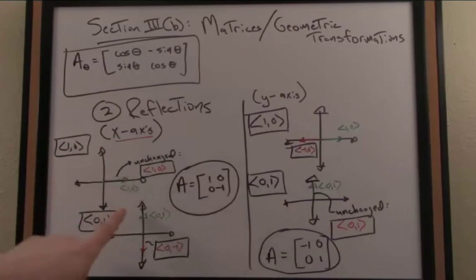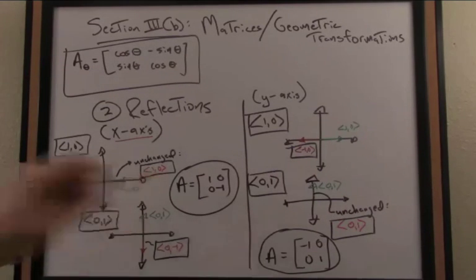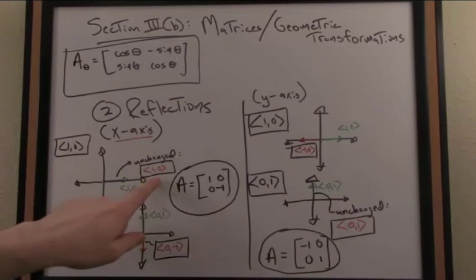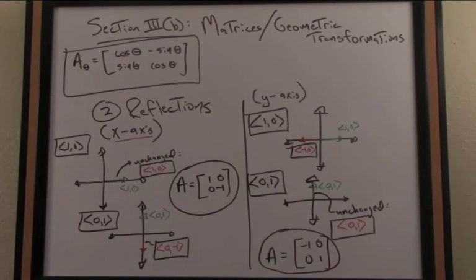So if I reflect about the x-axis and I start with the vector 1, 0 for instance, well if I reflect about the x-axis that leaves the vector as I've indicated unchanged. So my image of that vector is still 1, 0.